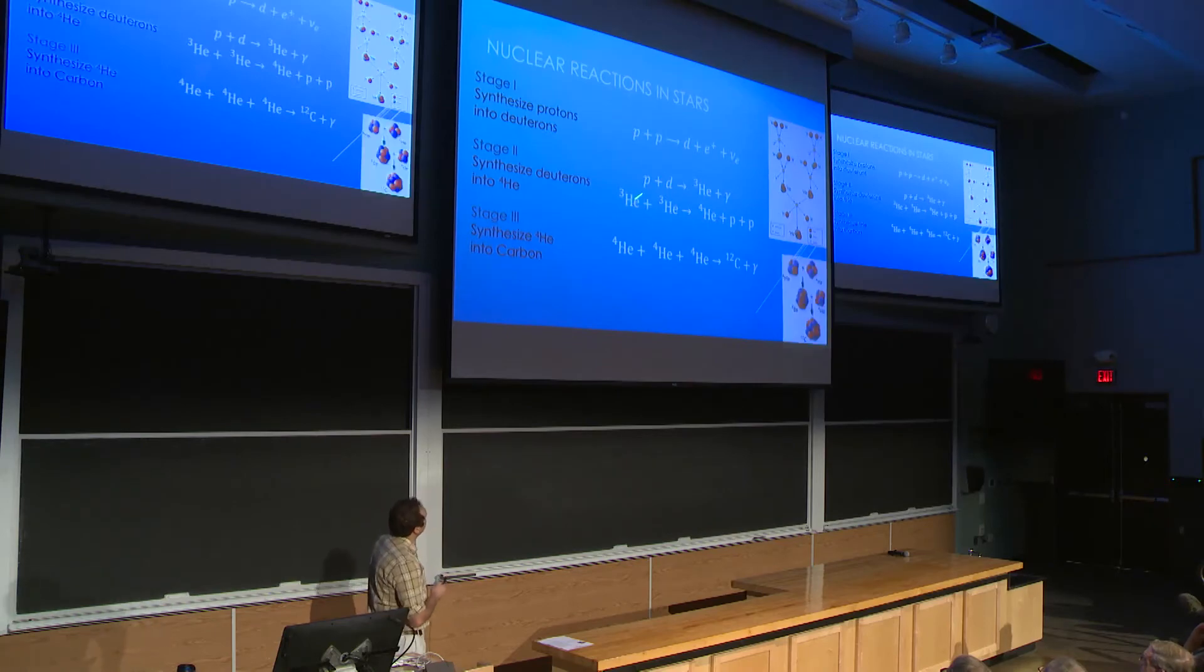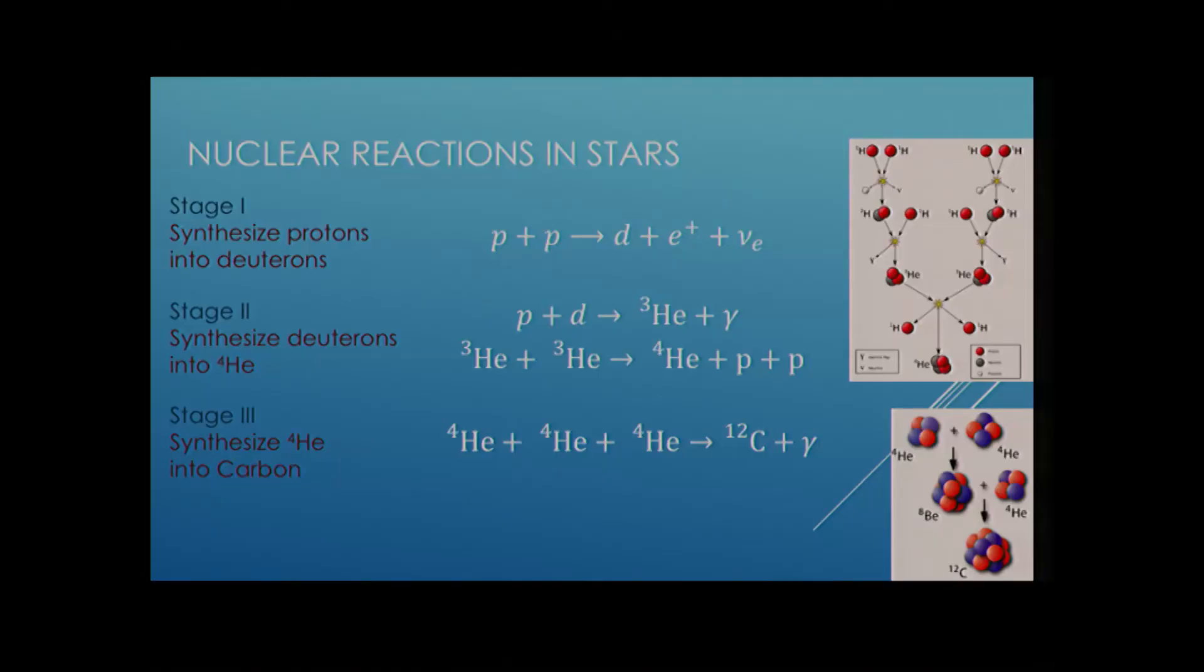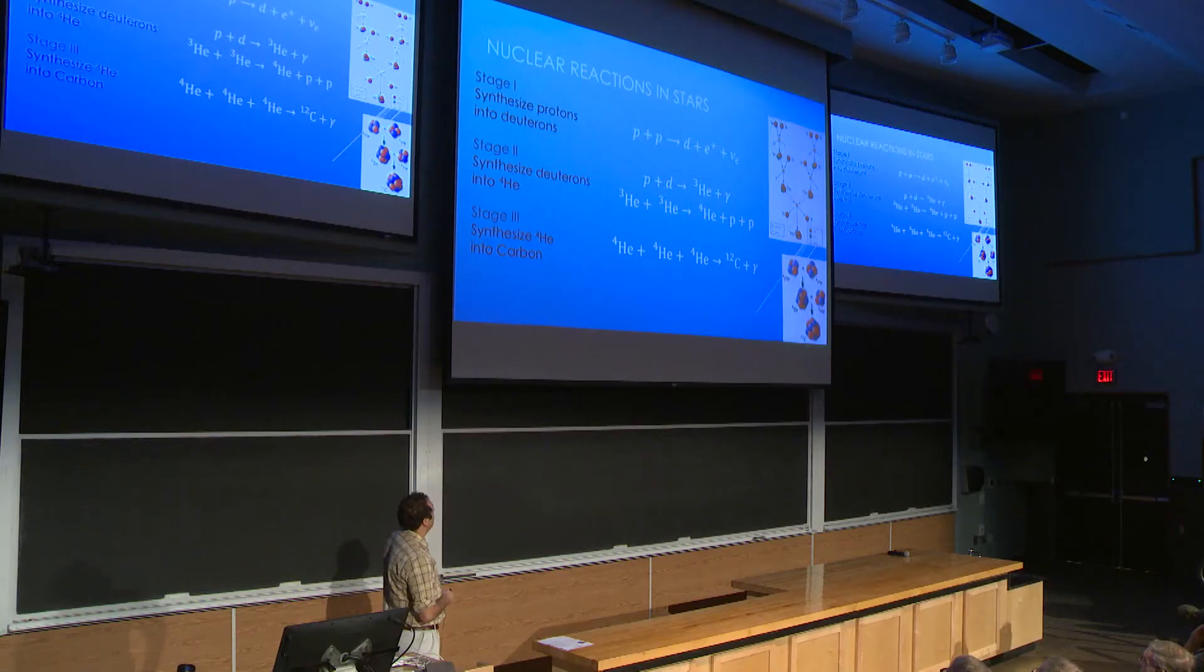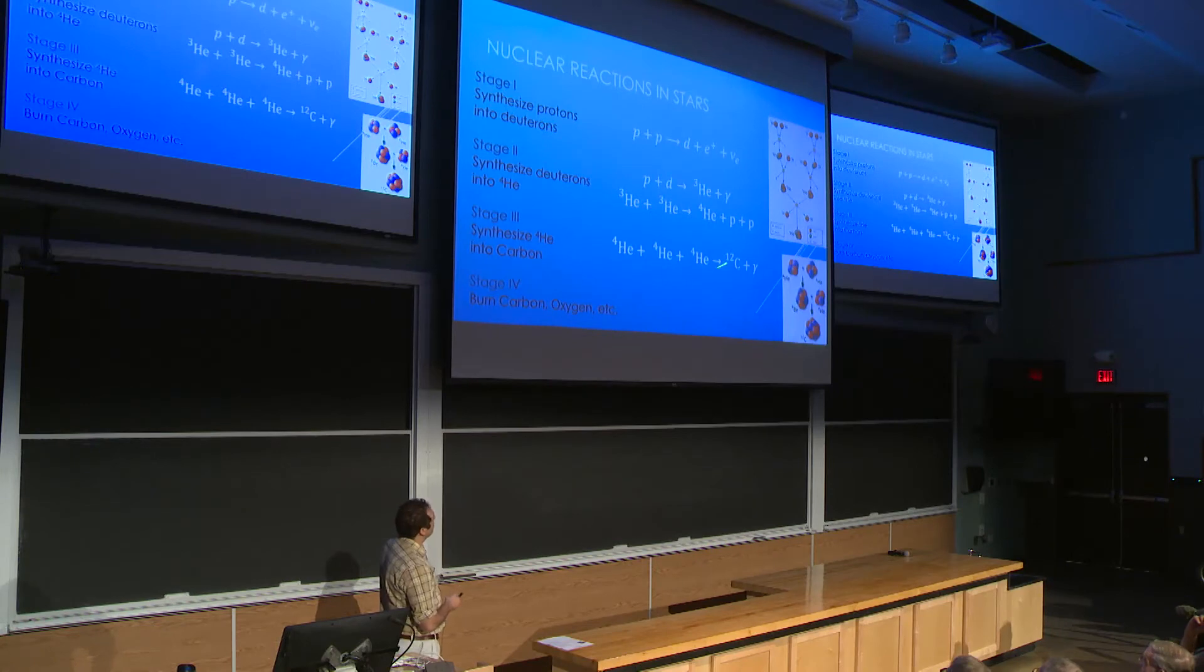Let's just talk about what the nuclear reactions are doing within a star. So the first stage that I have here is two protons coming together to form a deuterium. This is a weak interaction. With that deuterium nucleus, it can capture a proton to form helium-3. And then two helium-3 comes together and that forms your helium-4, plus two more protons. Together, these three reactions are called the PP reaction. This cartoon over here just shows that six protons come together to form one helium nucleus and two extra protons.